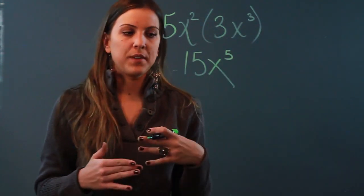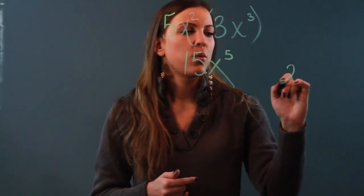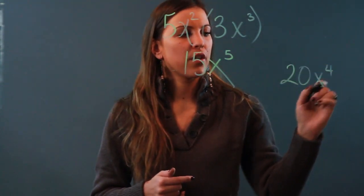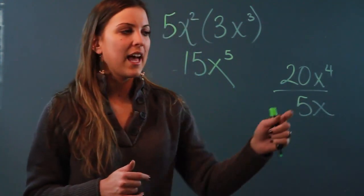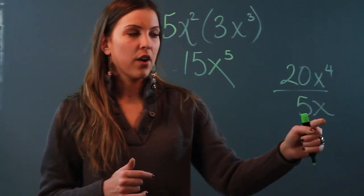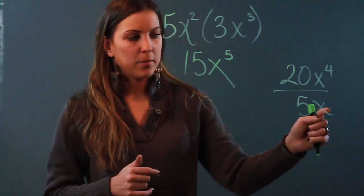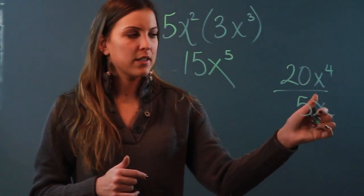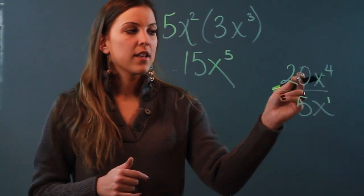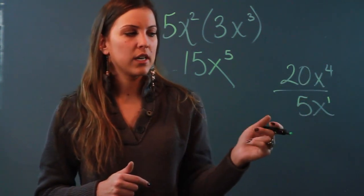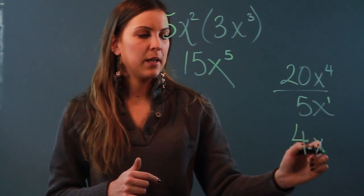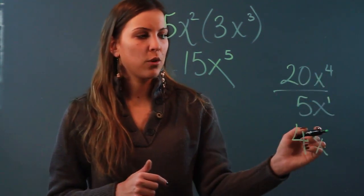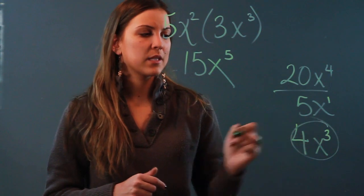Division law of exponents is sort of the opposite. If I had 20x⁴ over 5x, my division law says that I have to check if the bases are the same, and they are, and subtract the exponents. But be careful here because there is an exponent - it's not 0, it's an imaginary 1. So I divide the coefficients: 20 divided by 5 is 4. Keep the base and subtract the exponents: 4 - 1 is 3. So that's my quotient: 4x³.